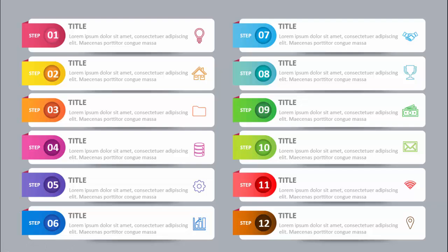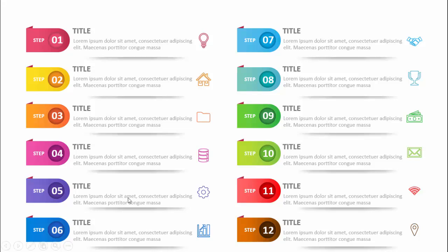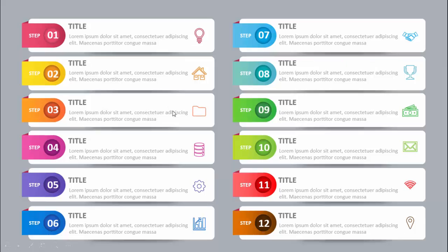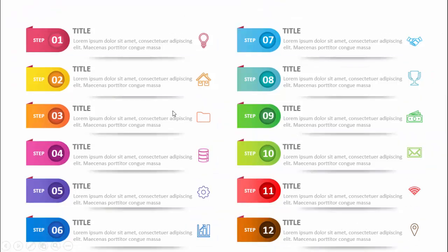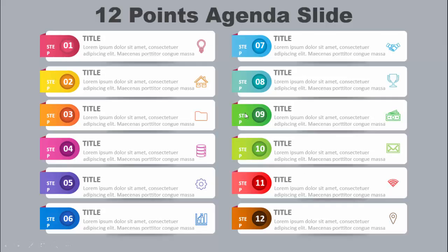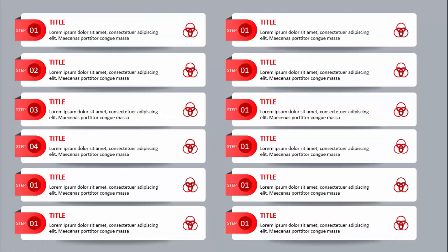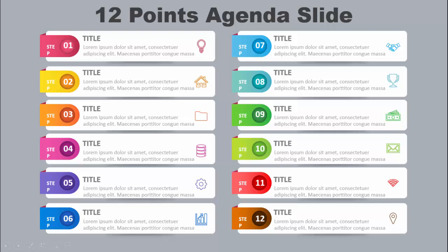I've created a few more slides with minor variations. This is my second slide where I've used only a white background with the colorful elements. If you feel that's too colorful, you can use this one. I've also made another slide where I've reduced the size of the agenda items. You can also make a single-color agenda, so you have four different options to choose from.